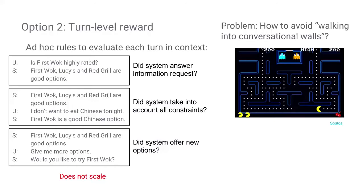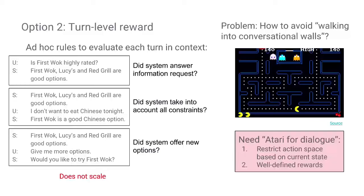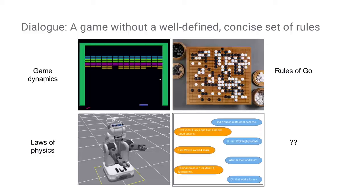Taking a step back, the overall problem is how do we avoid walking into walls in a conversation? In Atari's game of Pac-Man, when the agent reaches the lowest row, it knows it cannot go further because the emulator restricts the actions possible in any state. What we need is an Atari for dialogue where we can restrict the actions that are sensible in a state. But this is not straightforward because there are many implicit rules in dialogue, and we also don't have well-defined rewards. Essentially, dialogue is a game without a well-defined set of rules.